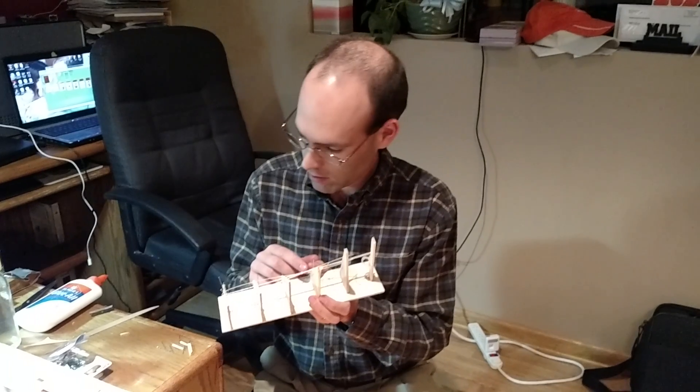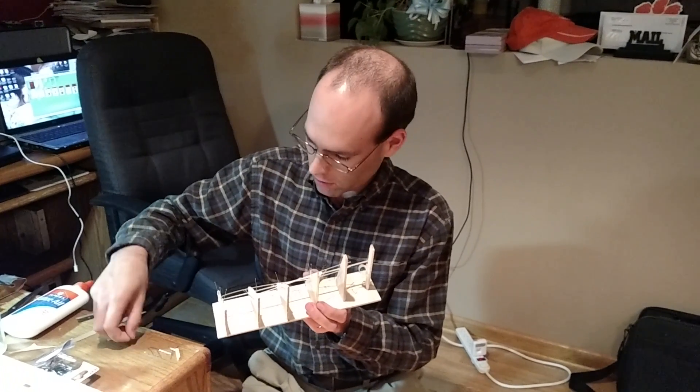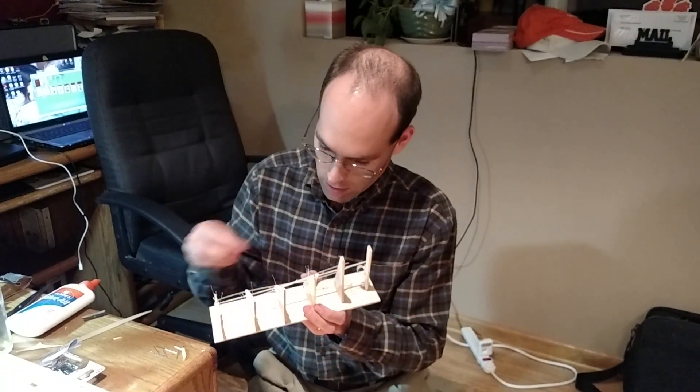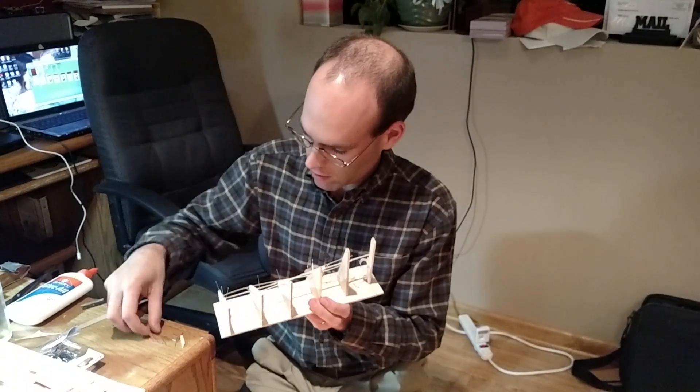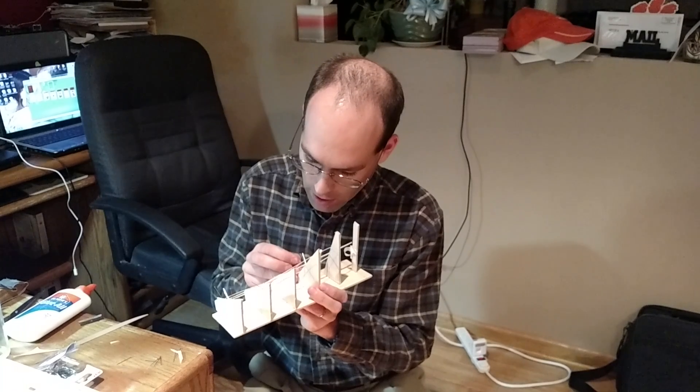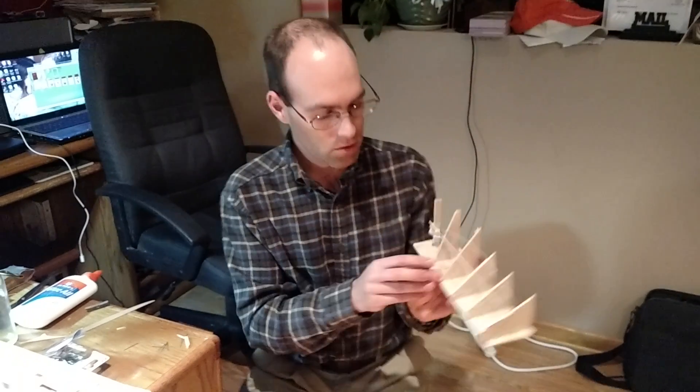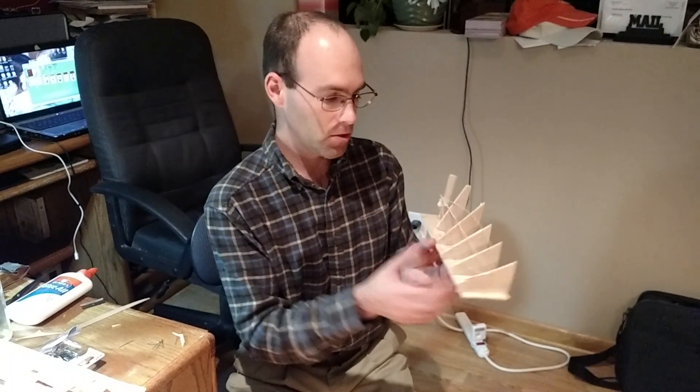And usually, the two most critical points for establishing the helical twist are that tip station and this one right here between the first and second rib bays, in the second bay. There we go.